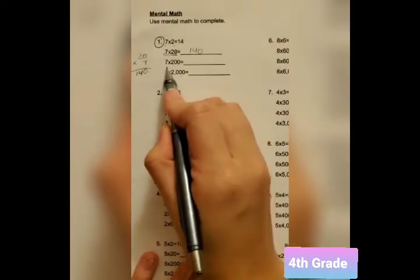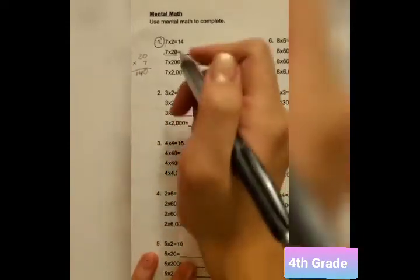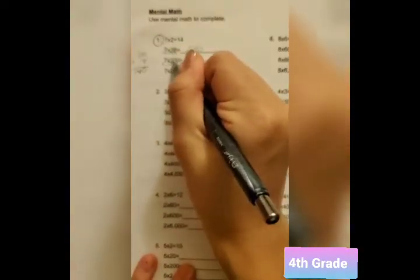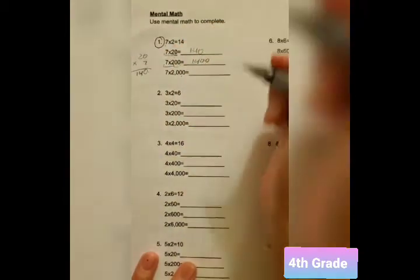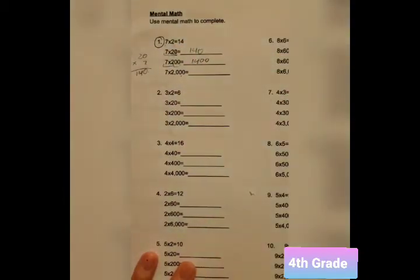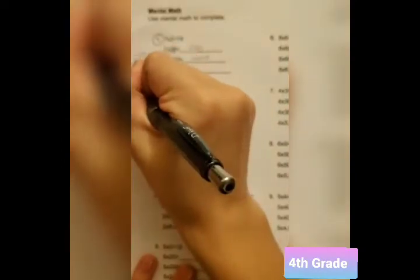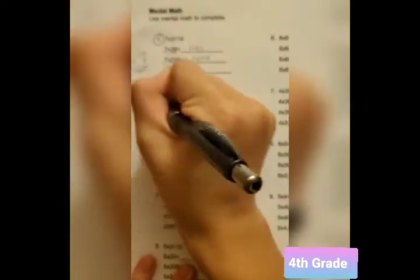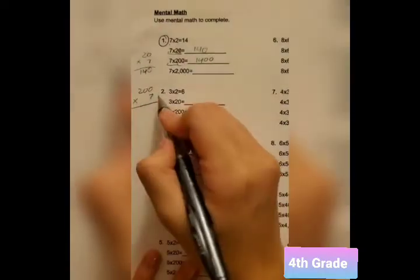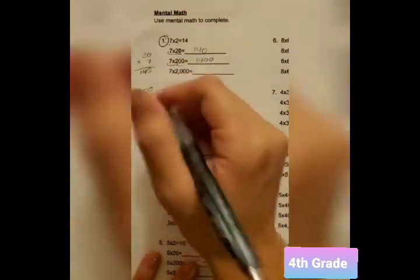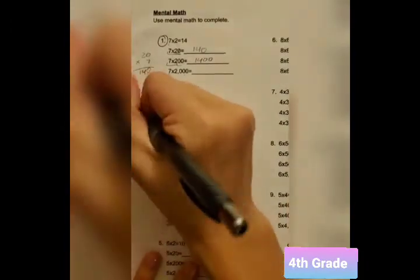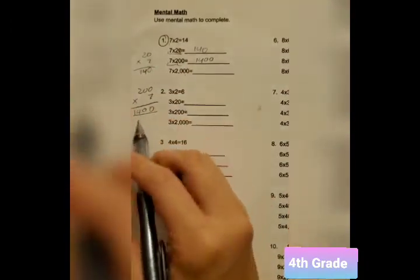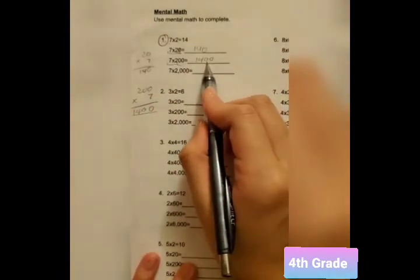On the next problem, we got 7 times 200. We know that 7 times 2 is 14. So, we add the two 0s at the very back. And to prove this, we could do 200 times 7. 7 times 0 is 0. 7 times 0 is 0. And 7 times 2 is 14. And we could see that we got the same answer as this one.